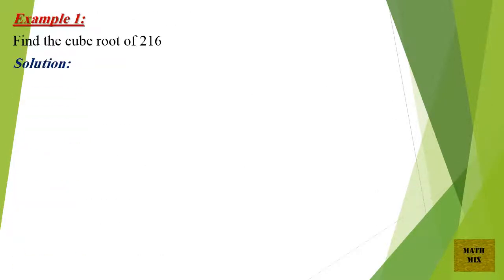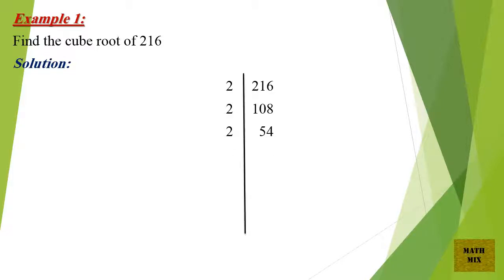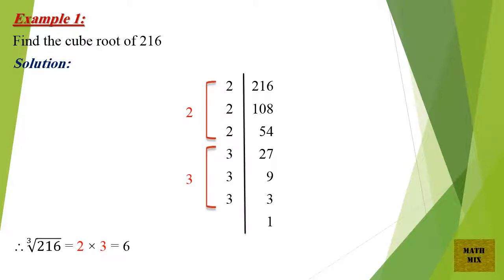Example 1: Find the cube root of 216. Solution. Therefore, the cube root of 216 equals 2 times 3, which equals 6.